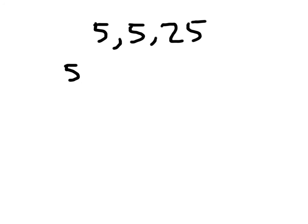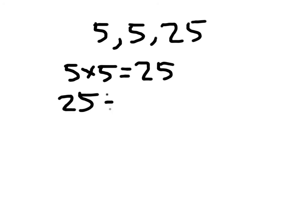I'll show you another example. We've got 5, 5, and 25. The reason I want to show you this example is that in this fact family we actually only have 2 equations we can write. 5 times 5 equals 25, and 25 divided by 5 equals 5. Those are the equations for this fact family, relating the numbers 5, 5, and 25 together.